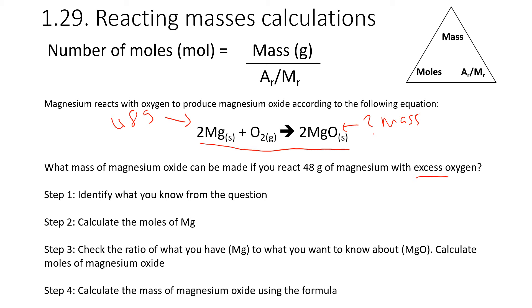What you do in this kind of question is you follow these four steps. First step, identify what you know from the question. This is a place where people trip up quite a lot because they attribute the masses to the wrong things. We know that we have 48 grams of magnesium. Then we calculate the moles of magnesium. We do our equation, moles equals mass divided by AR. We would divide 48 by 24, which is the mass of magnesium, which gives us two moles of magnesium.